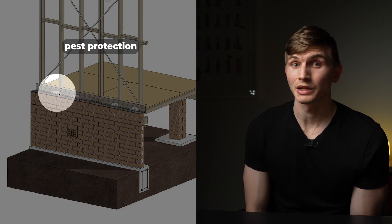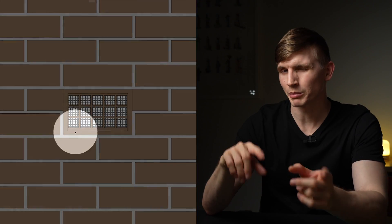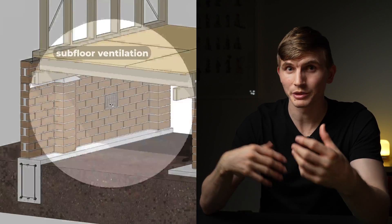Now with a few more courses laid it's time for pest protection. This comes in a few forms like a very fine steel mesh. Although it can be added to the brick vents, consideration for the impacts on the subfloor ventilation need to be taken into account.